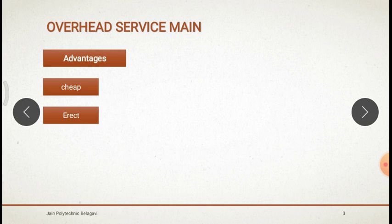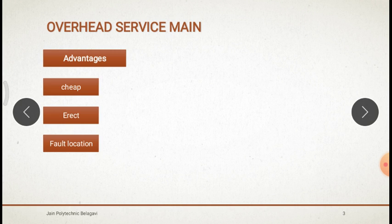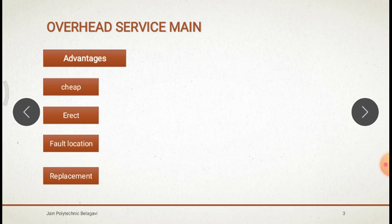Underground Servicemail means we have to dig the earth and connect the underground cable, but not in the case of Overhead Servicemail — it is easy compared to that. Next, fault location is also easy because it is visible. In Underground Servicemail, if any fault occurs, you have to dig the earth to detect and correct the fault. But in Overhead Servicemail, fault location and correction is easy. It will also be easy replacement — if you want extension or need to replace any wire, it is easy compared to Underground Servicemail.